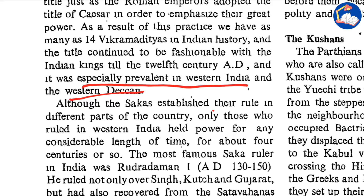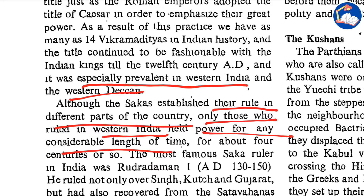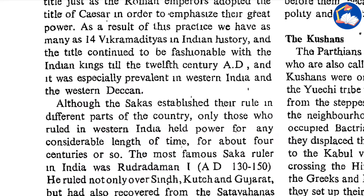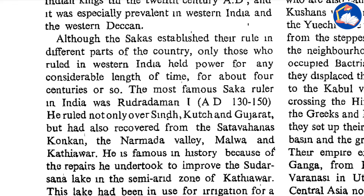Although the Sakas established their rule in different parts of the country, only those who ruled in western India held power for any considerable length of time — for about four centuries. The most famous Saka ruler in India was Rudradaman. He ruled not only over Sindh, Kutch and Gujarat, but had also recovered from the Satavahanas the regions of Konkan, Narmada valley, Malwa and Kathiawar.